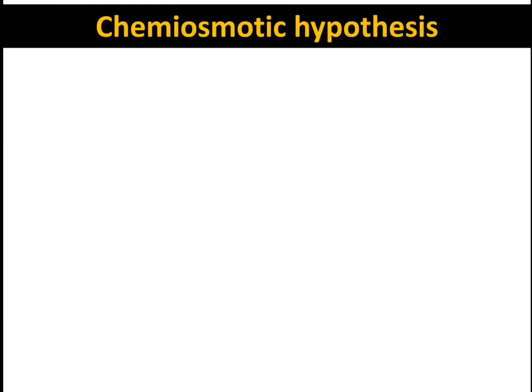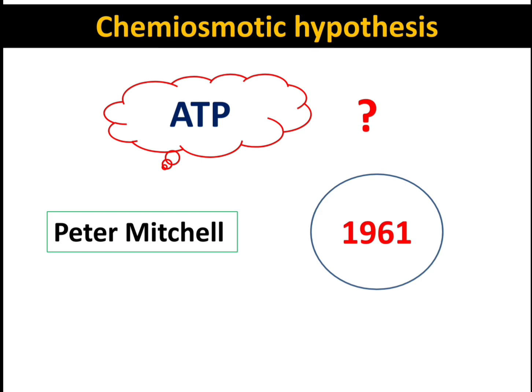Today's topic is Chemiosmotic Hypothesis. This hypothesis explains the formation of ATP molecules within the cell. This concept was given by Peter Mitchell in the year 1961, for which he got a Nobel Prize.